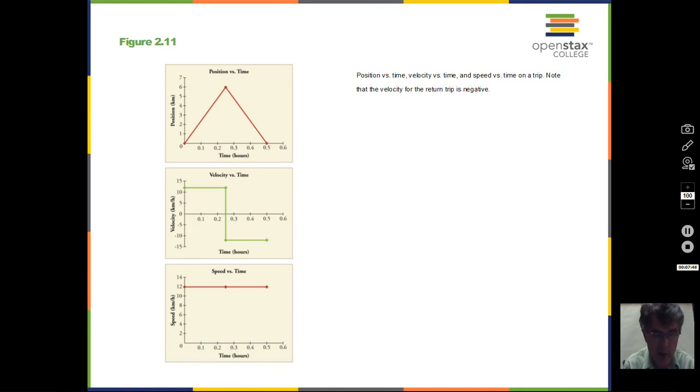For speed, we get credit for all the turns and twists in the roadway. For velocity, we don't get that credit. It's as the crow flies. The displacement is a straight line distance.